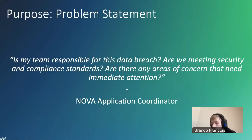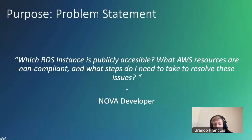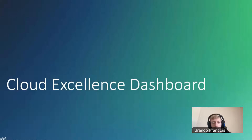If we go one level lower, we can look at a developer in the NOVA team — maybe they want to know which RDS instance is publicly accessible, what AWS resources are non-compliant, and what steps they need to take to resolve these issues. We see the questions that the developer versus, for example, the CEO asks are totally different, although they are all facing the same issue. The Cloud Excellence Dashboard is a solution that can give answers to these different questions, each on their respective level.